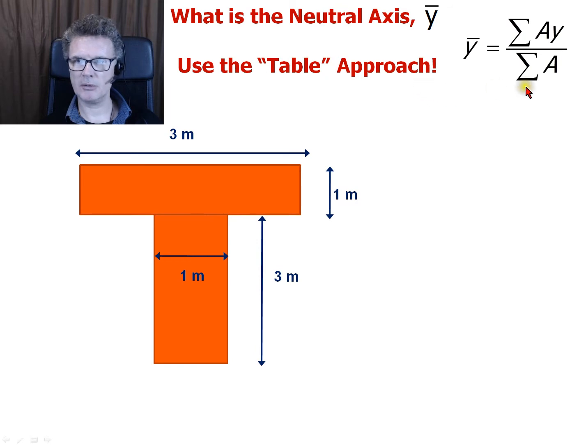This time we want to use the table approach. We want to find the neutral axis using the table approach. So we're still going to be applying this formula, but how would you do that in the table approach?